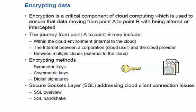Asymmetric encryption is also known as public key encryption. In symmetric encryption, there is only one key and all communication parties use the same key for encryption and decryption. Whereas in asymmetric or public key encryption, there are two keys — one key is used for encryption and a different key is used for decryption.